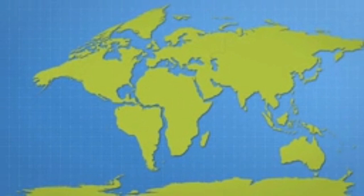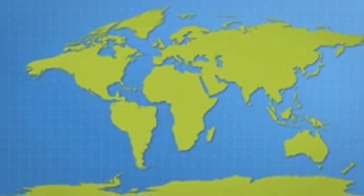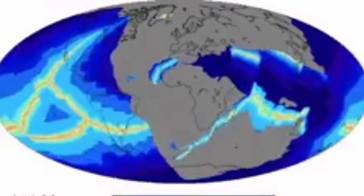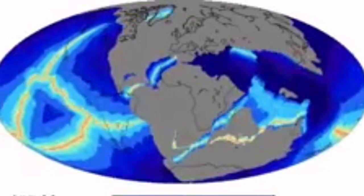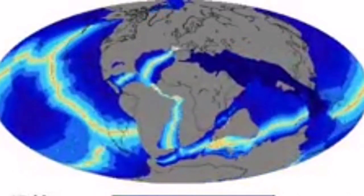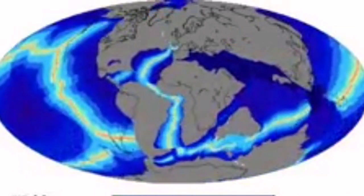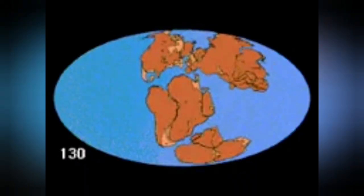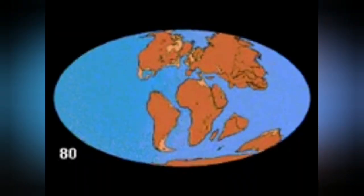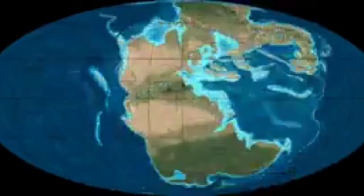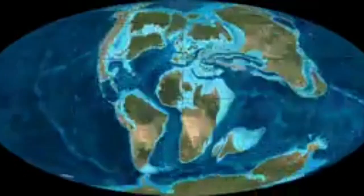We first discovered that certain coastal areas of the world — for example Africa and South America — match together, as if they have been joined together in the past. Alfred Wegener discovered this first.